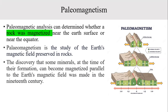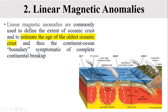The first picture was taken about millions of years ago. The positive and negative charges represent normal polarity and reverse polarity. It was shrunk down about 1.5 million years ago, and these rocks illustrate the magnetic properties that were present in the past and still exist today. Linear magnetic anomalies are commonly used to define the extent of oceanic crust and to estimate the age of the oldest oceanic crust, and thus the continent-ocean boundary that is symptomatic of complete continental breakup.